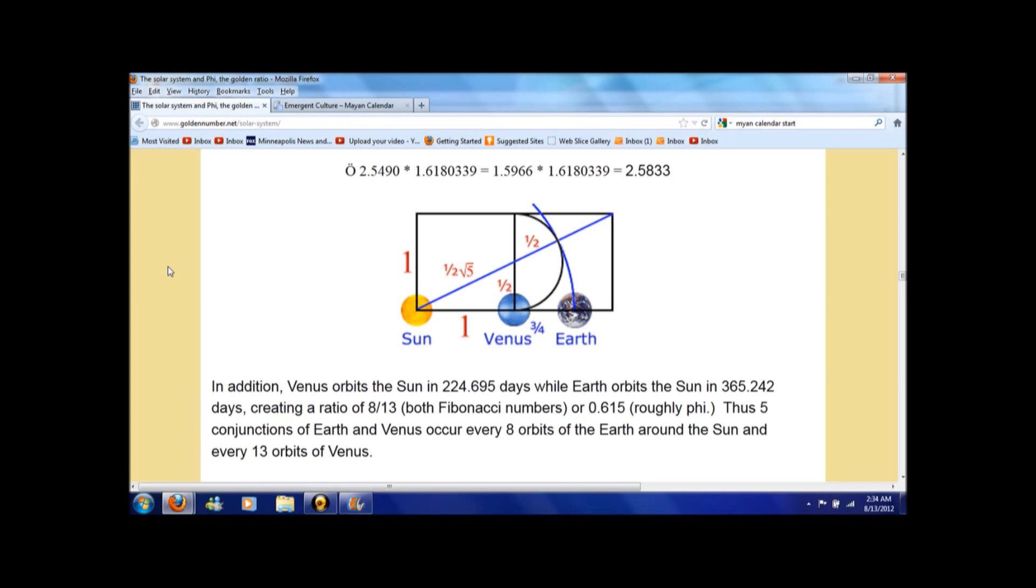Now, today's date is 8-13 of course and I find it interesting that we have the crescent moon blocking out Venus for a short time today.